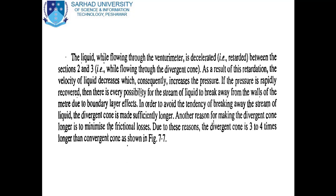When the liquid flows through the divergent cone, it is decelerated between sections 2 and 3. As a result of this retardation, the velocity of the liquid decreases, which consequently increases the pressure. If this pressure is rapidly recovered, there is every possibility of the stream of liquid breaking away from the walls of the meter due to boundary layer effects. To avoid this tendency, the divergent cone is made sufficiently longer. Another reason for making the divergent cone longer is to minimize frictional losses. For these reasons, the divergent cone is three to four times longer than the convergent cone.